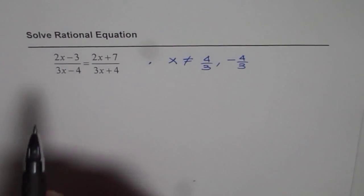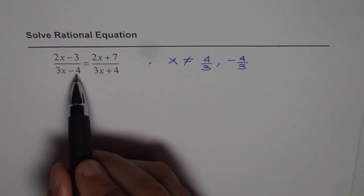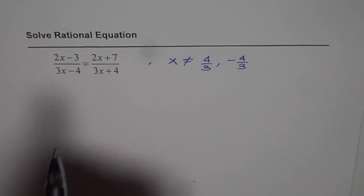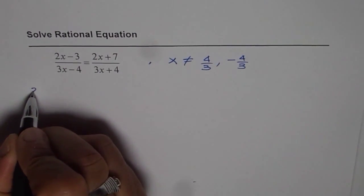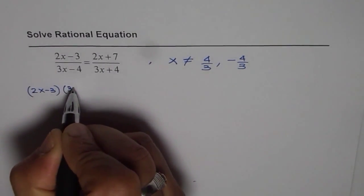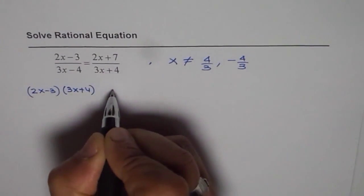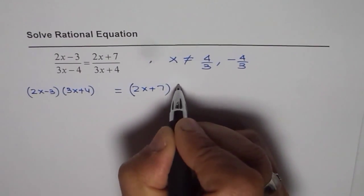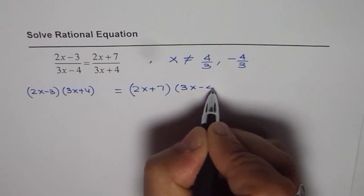Now let's begin by solving this equation. We can cross multiply and then solve the equation. So we get 2x minus 3 times 3x plus 4 equals 2x plus 7 times 3x minus 4.